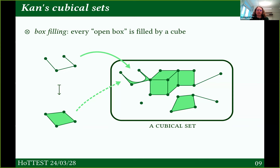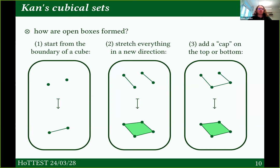The nice thing about box filling is that it generalizes nicely into higher dimensions. In general, we can form open boxes in this nice way: start from the boundary of a cube, stretch everything in a new direction, and add a cap on the top or the bottom. An equivalent way to formulate it — this is the one we'll use when we switch to different cubes — is more general: start from an arbitrary sub-object of some cubical set, stretch everything in a new direction to form a cylinder, and add the cap — possibly in the middle.